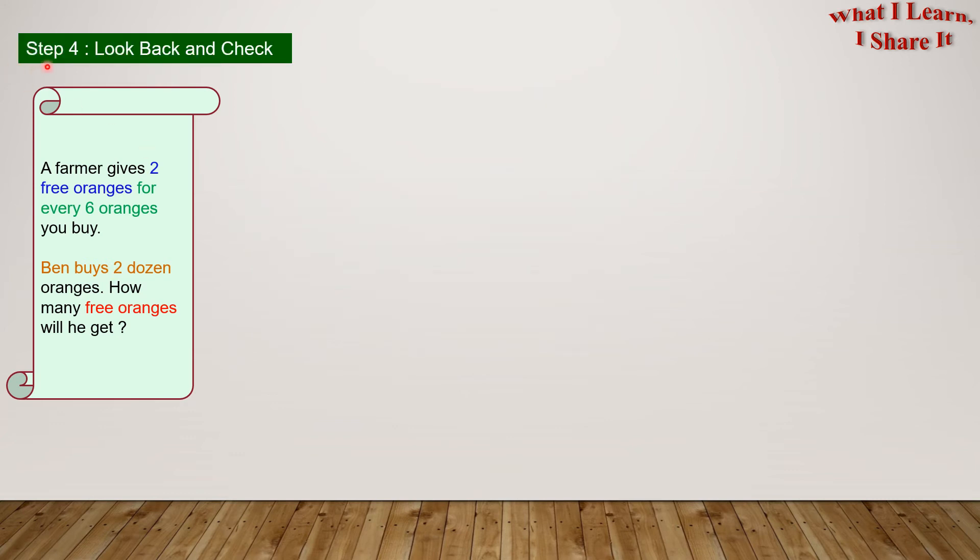Step 4. Look back and check. Now let's use another way to solve this problem. Let's make a group of 6 oranges. So here is a group of 6 oranges. Let's repeat the group to form 2 dozens. Here is another group, and these 2 groups make 1 dozen.